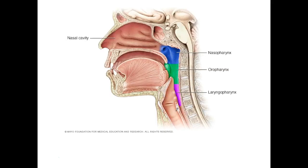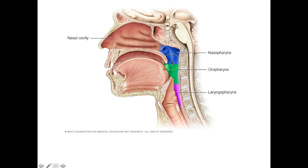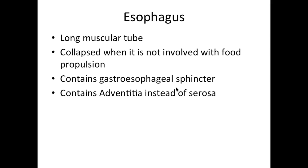The larynx eventually becomes the trachea, which is your windpipe, and the pharynx if you follow it down eventually becomes the esophagus. Where the nasal cavity and the pharynx meet, this area is called the nasopharynx. Where the oral cavity and the pharynx meet, this is called the oropharynx. And where the larynx and the pharynx meet, this is called the laryngopharynx.